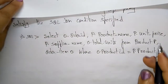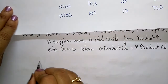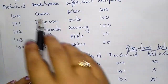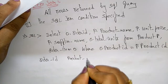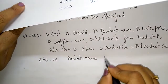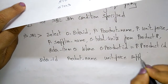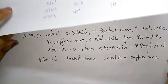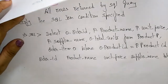The fields selected from both tables are: o.order_id from the order item table, p.product_name from the product table, p.unit_price from the product table, p.supplier_name also from the product table, and o.total_units from the order item table. These are the fields that are selected and combined.